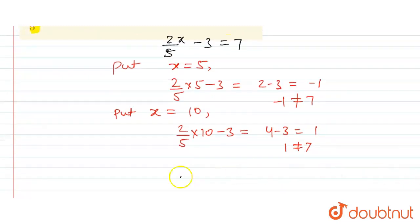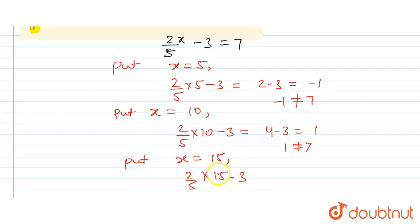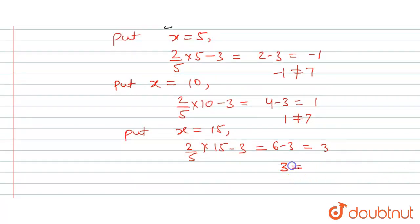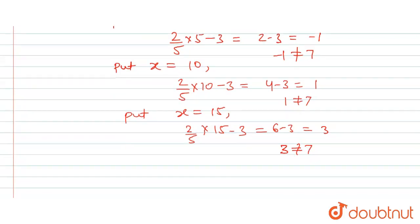We will put x equal to fifteen. Two upon five into fifteen, minus three — fifteen cancels with five to give three — so two into three is six, minus three equals three. But three is not equal to seven, so this is not a solution either.